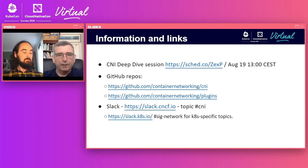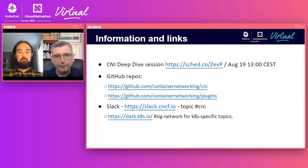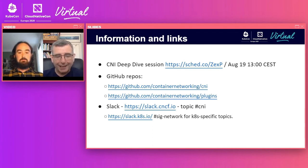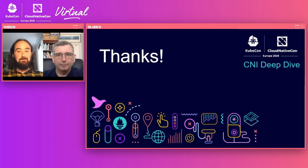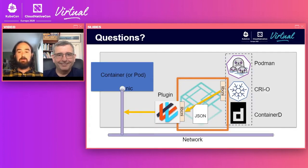Let's put up some links. The deep dive session — if you're watching live, it's tomorrow. The GitHub links where the code lives: container-networking/CNI is the spec and library which moves a bit slower, and container-networking/plugins moves quite a lot faster. We have our own Slack channel in the CNCF Slack. But remember, if your question is really about Kubernetes, they have their own area and their own Slack. Thanks everybody for coming — we're here to answer questions. Please join us in Slack and GitHub. Thank you very much for watching.